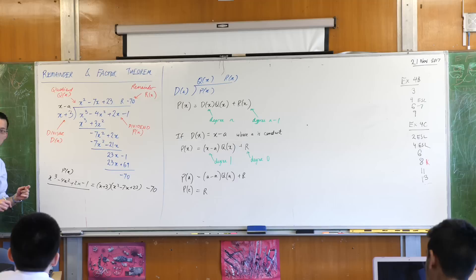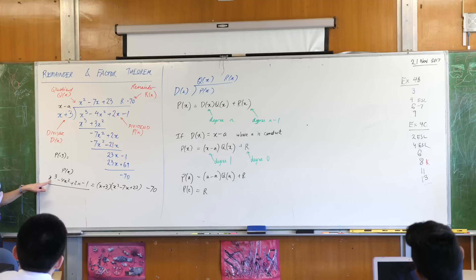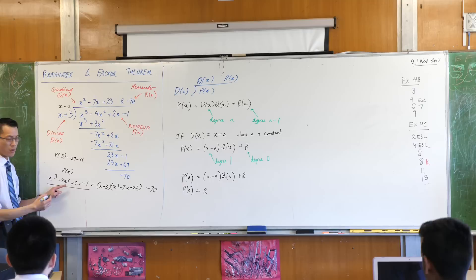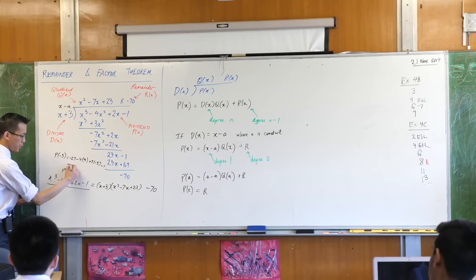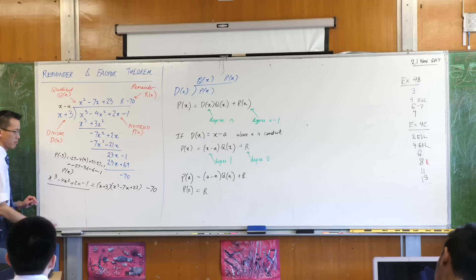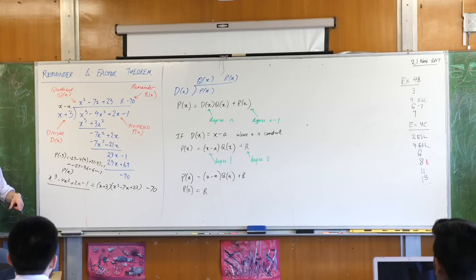So if this is P of X, then if I put in P of negative 3, let's just quickly crunch this number. What's that going to be? Negative 3 all cubed is going to be negative 27 minus 4 lots of 9 plus 2 lots of negative 3 minus 1. Minus 27, minus 36, minus 6, minus 1. Looks like minus 70 to me. Yes?